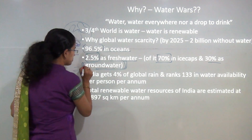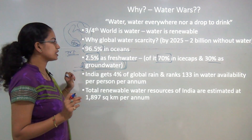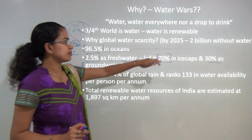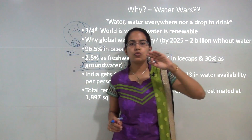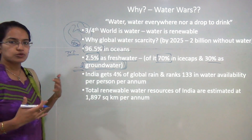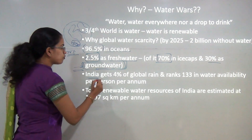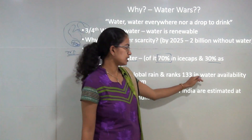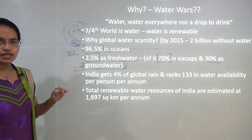In terms of proportion, we have a very meager amount of water available for human use. It is estimated that by 2025 there would be nearly 2 billion people without water if the scenario continues at a similar pace. India receives 4 percent of the global precipitation range and ranks 133rd in water availability per person per year.